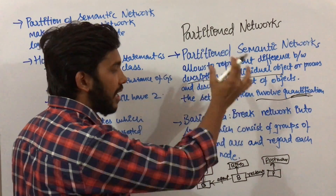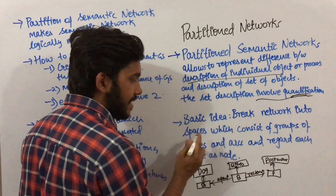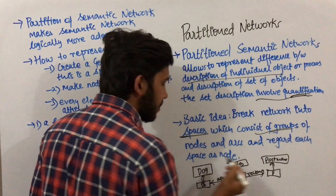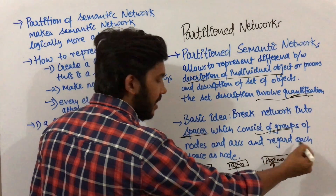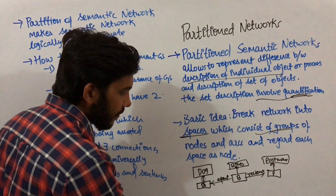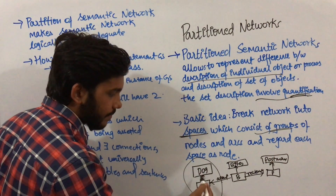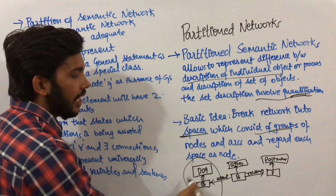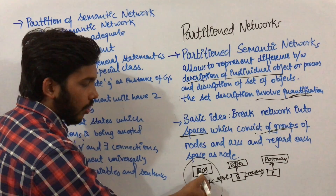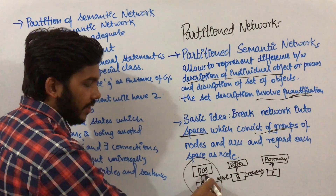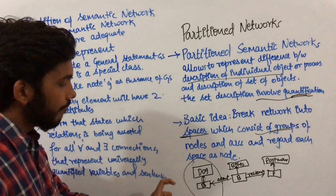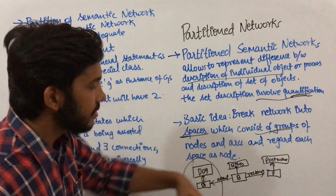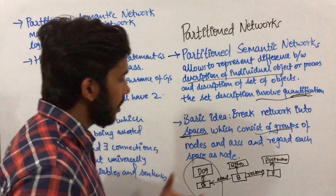The basic idea of partition network is to break the network into spaces. We break the network into spaces which consist of groups of nodes and arcs. For example, 'dog' can be one space containing different nodes — different individual dogs like Tom and others with different names. Each space has different nodes and arcs within it.